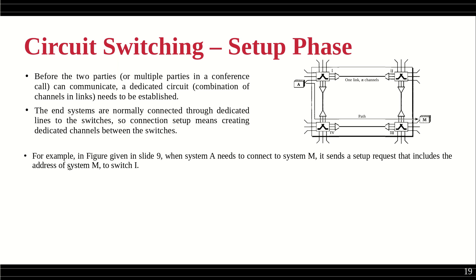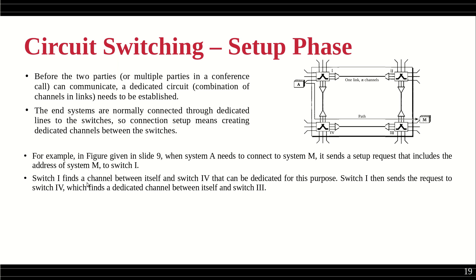When system A needs to connect to system M, it sends a setup request containing M's address to switch one. System A only knows it wants to connect to machine M. It sends a special connection request packet with M's address to switch one, and it is switch one's responsibility to identify where M is located and set up the necessary connections.